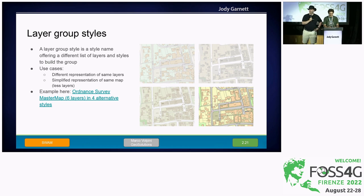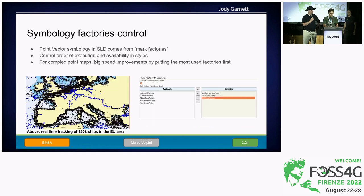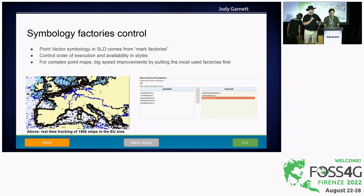A new feature in GeoServer 2.21 is layer group styles. If you are publishing a layer group, you can now provide an alternate set of styles — meaning different styles for the same layers, and also a different layer list if needed. We also have a new feature that allows us to control the symbology factories, which really helps when you need to publish hundreds of thousands of points. This is a map from EMSA depicting all ships in the European seas — about 150,000 ships.